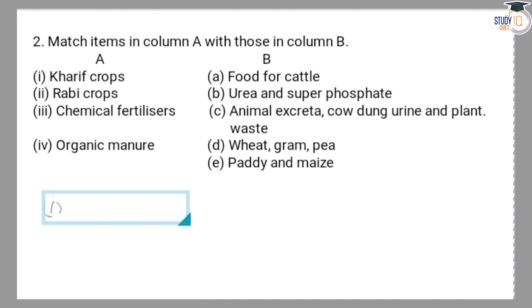The first item is Kharif crops. Kharif crops are those crops which we grow in the rainy season. So the answer is (e) paddy and maize.